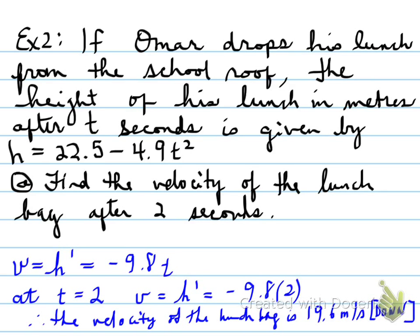The negative in the answer disappeared. The reason is you have to describe the result with direction. The negative implies it's moving in a downward motion because we're talking about height. So the velocity is 19.6 meters per second downwards. Make sure you take that negative out and describe the direction it's moving in.